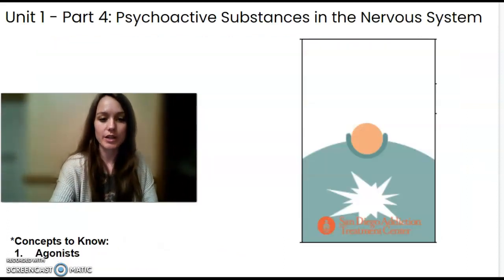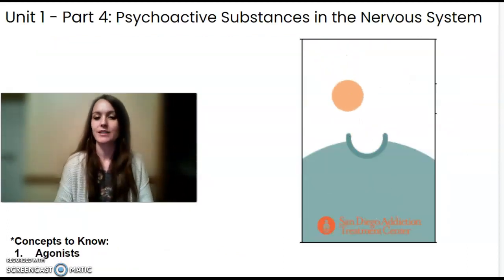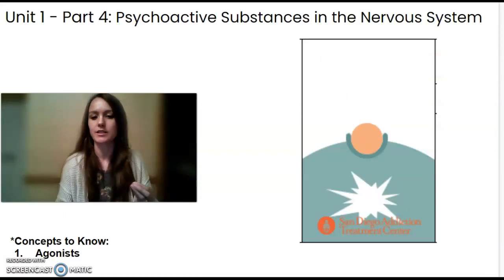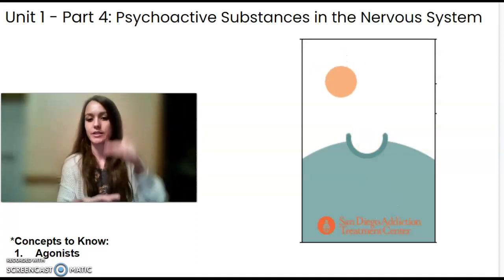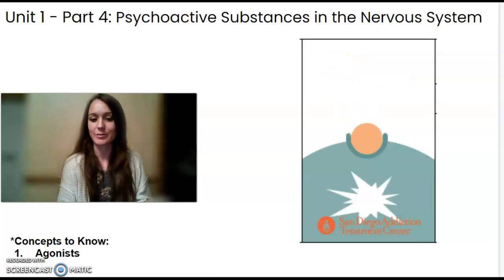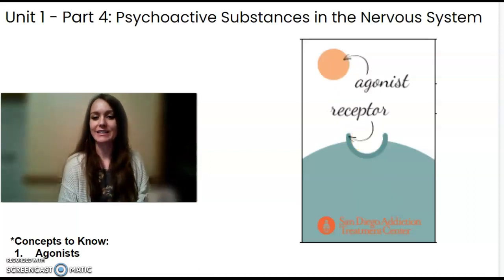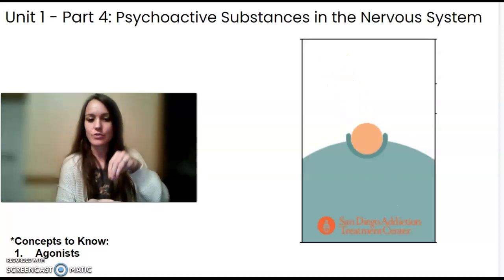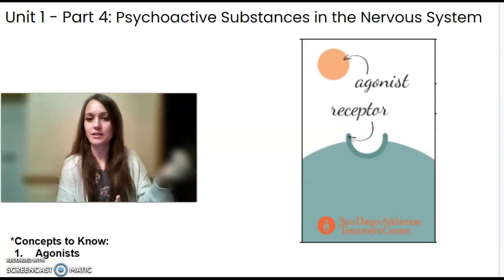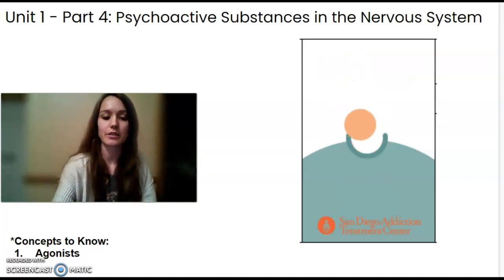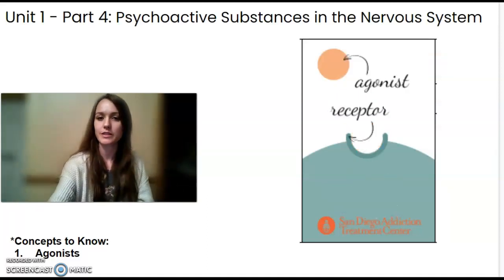One type of psychoactive substance is an agonist. An agonist is any type of substance that when it enters the synapse, it acts like the body's neurotransmitters. An agonist can be chemically shaped in such a way that it fits into a receptor site, and when it fits into that receptor site, it sends a brain message like a neurotransmitter would.